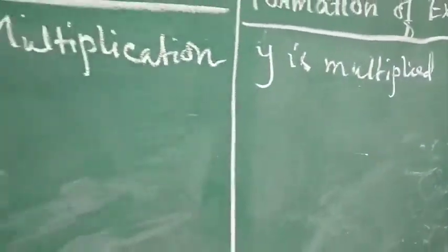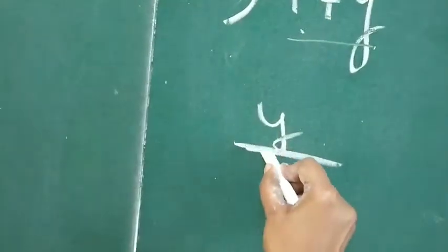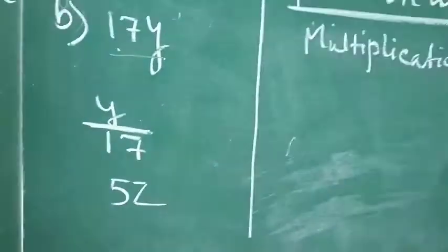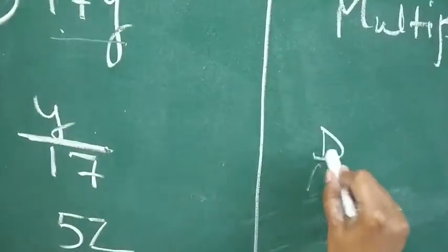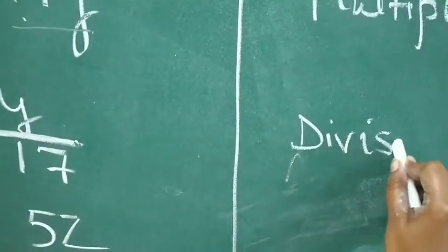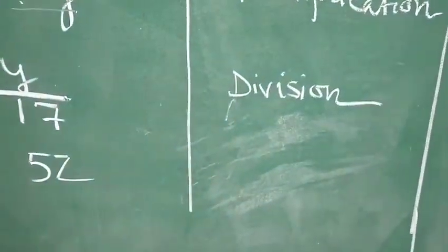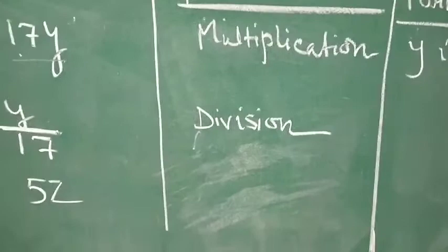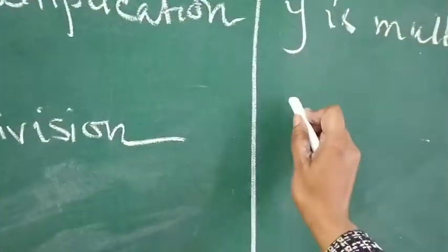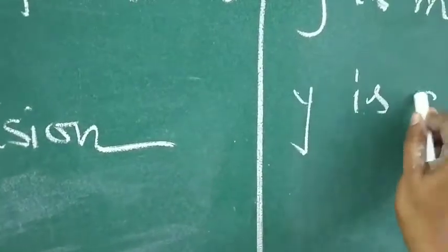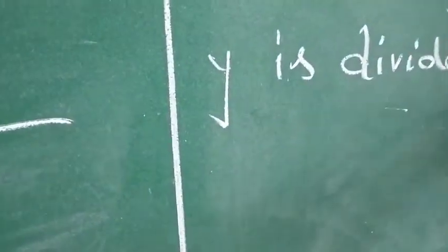Now, in the next one, division is used. So, here, under operation, we will write division. And how it is formed? Here, y is divided by 17. So, we will write y is divided by 17.